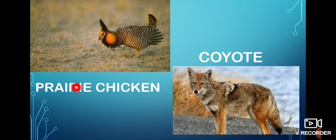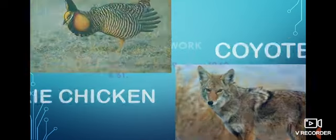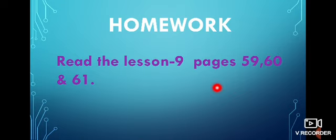You all understand the topic about the prairies — where it is located, how is the land, what is the climate, vegetation, and wildlife. I hope you all understand this nicely. Today's homework: you have to read Lesson 9, pages 59, 60, and 61 in the book. Then only you can get a clear picture of the lesson. We will meet in the next session. Thank you, children.